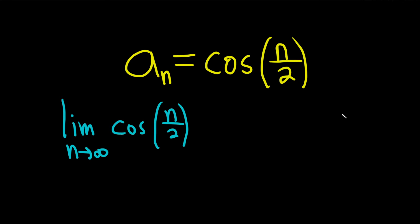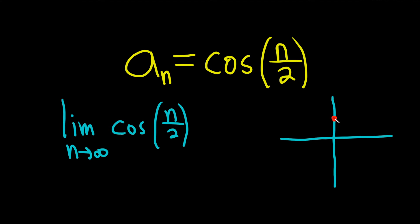The question doesn't want a proof, it just wants an answer. So if you think about just the cosine of x — ignore the 2, it's not really going to matter — the graph of cosine looks something like this.